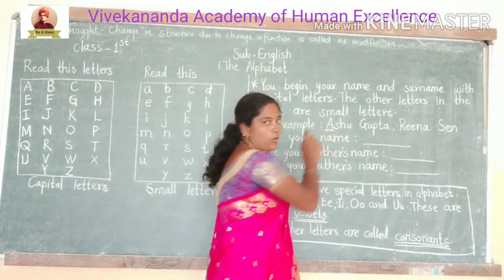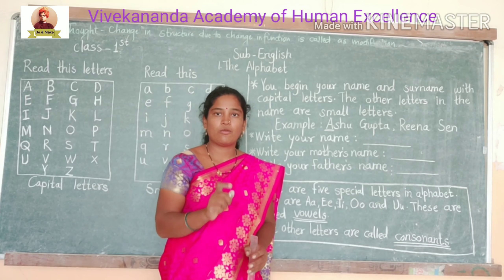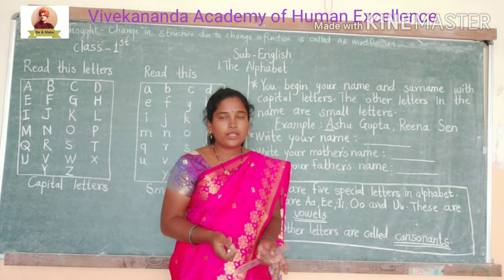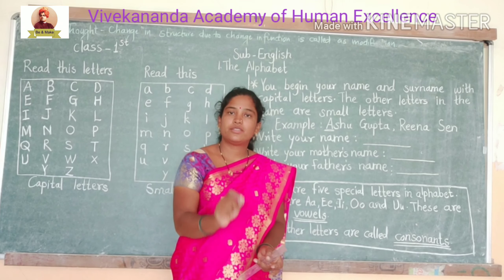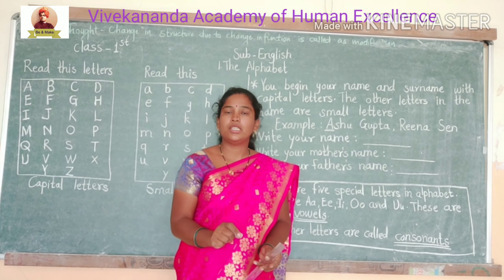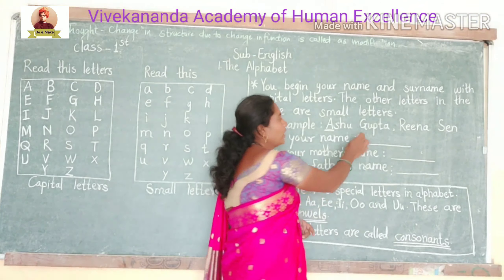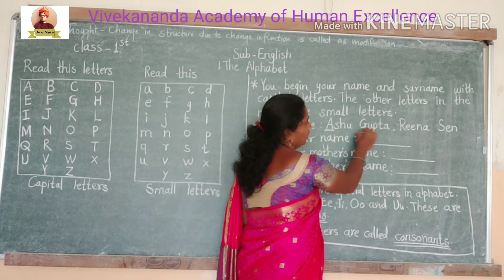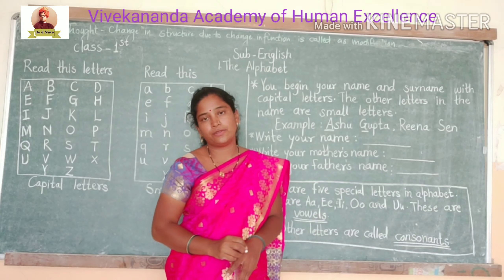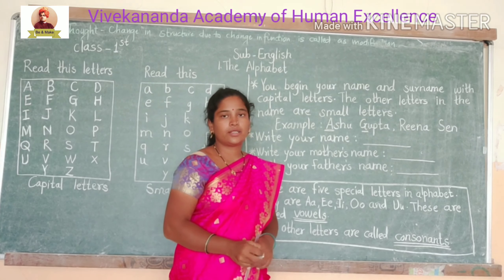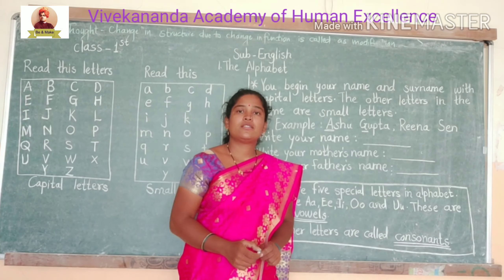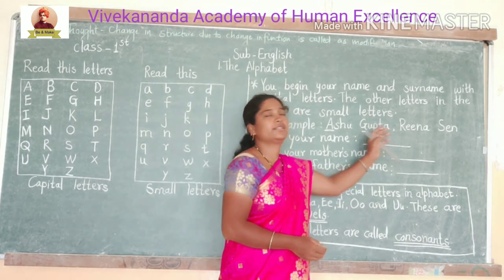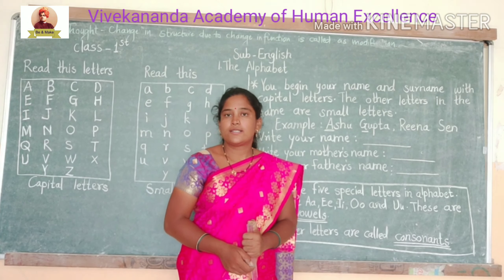This is the name of one girl. If you are writing your name, you should write the first letter of your name in capital. Gupta is the surname — G is the first letter of the surname, and G is written in the capital letter. The other letters are written in small letters.